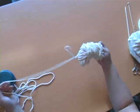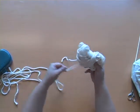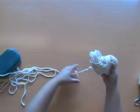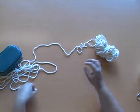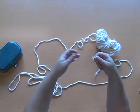So to make a center pull ball, first you want to take a fair amount of yarn off the ball, but not too much, just enough so you have a little bit to work with.